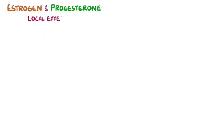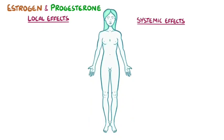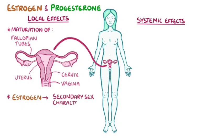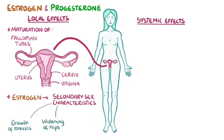Both estrogen and progesterone have local effects, meaning that they act on the organs and tissues nearby, as well as systemic effects, meaning on the rest of the body. Starting with puberty, estrogen and progesterone are responsible for maturation of the female reproductive organs: the fallopian tubes, the uterus, the cervix, and the vagina. Estrogen is also responsible for female secondary sex characteristics, like the growth of breasts and the widening of the hips, as well as distribution of fat on the buttocks, hips, and thighs.